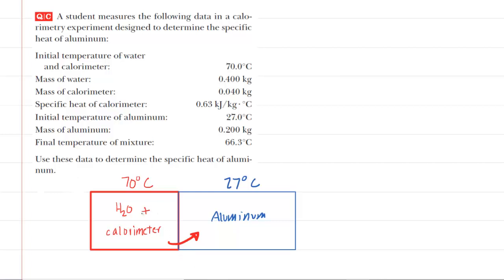In this question, we have water and a calorimeter at 70 degrees Celsius in contact with aluminum at a cooler temperature of 27 degrees Celsius. We have shown an arrow indicating that heat will flow from the warmer objects to the cooler objects.